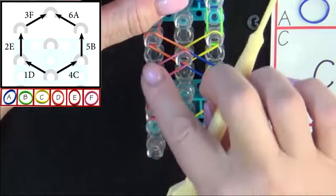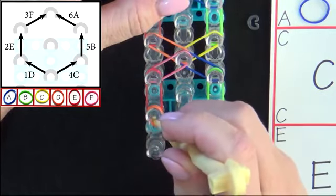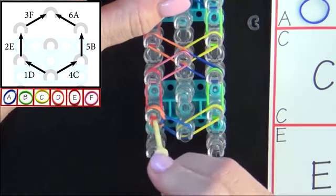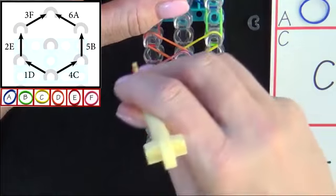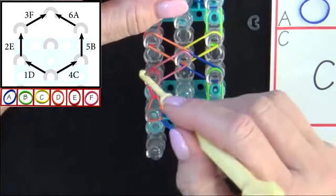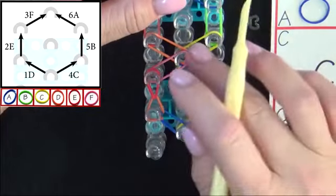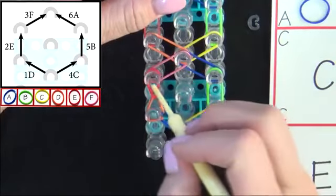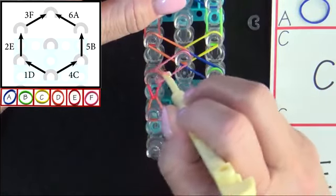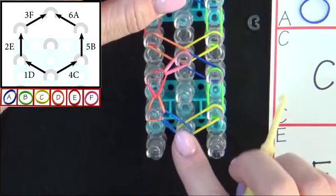The next band we loop will be 2E. You reach in and pull back the top D band. Grab the E and pull it forward. Again, notice how it made that teardrop shape.